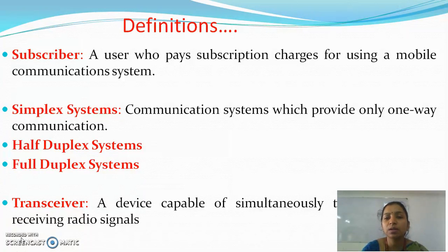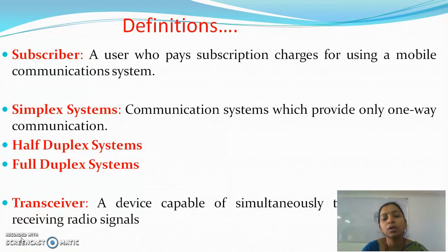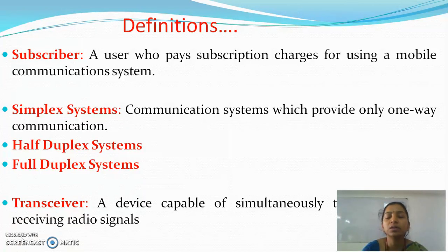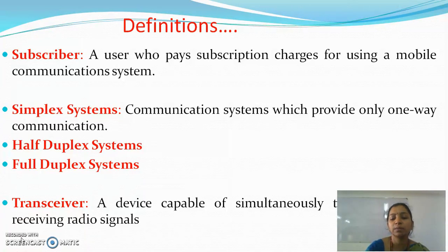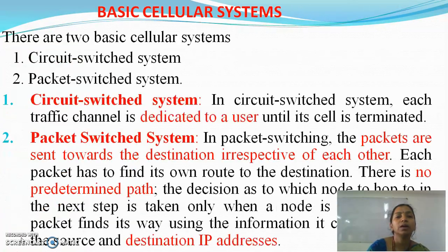Simplex systems provide only one-way communication. There are also half duplex and full duplex systems providing two-way communication. A transceiver is a device capable of simultaneously transmitting and receiving radio signals.